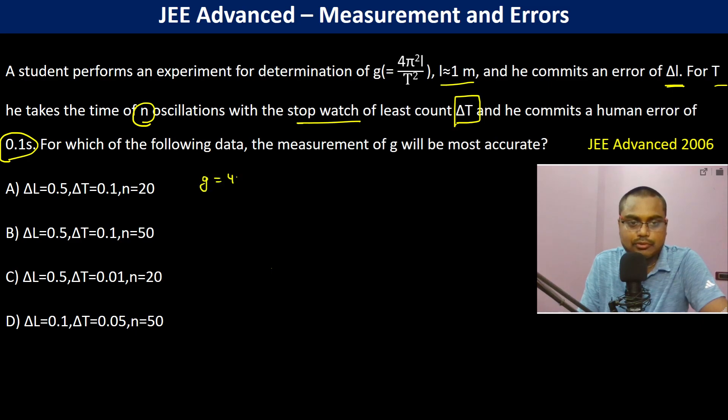So g is 4π² L divided by T². Therefore, ln of g is going to be ln(4π²) plus ln(L) minus 2 ln(T).